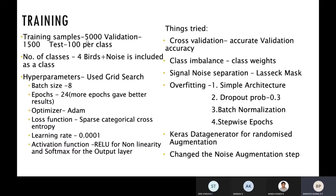These are the training specifications: we used 5000 samples for training, 1500 for validation, and 100 per class for testing. Number of classes is 4 birds plus noise as a class. For hyperparameters found using grid search: batch size is 8, epochs is 24 as more epochs gave better results, Adam optimizer, sparse categorical cross entropy for loss function, learning rate 0.001, ReLU activation function for non-linearity, and softmax for output layer.